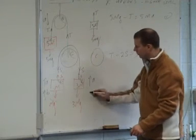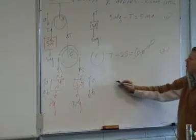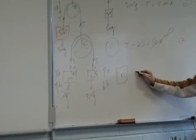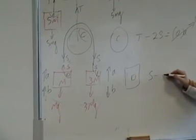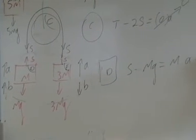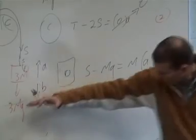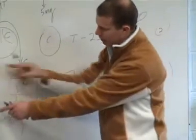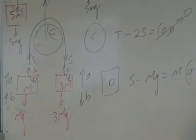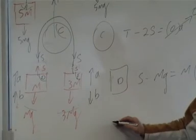Looking at the easier inner mass — the forces up minus the forces down equals mass times acceleration. It has two accelerations: the whole system goes up at a, and within the pulley it goes up at B, so the combined acceleration is A plus B. That's equation number three.